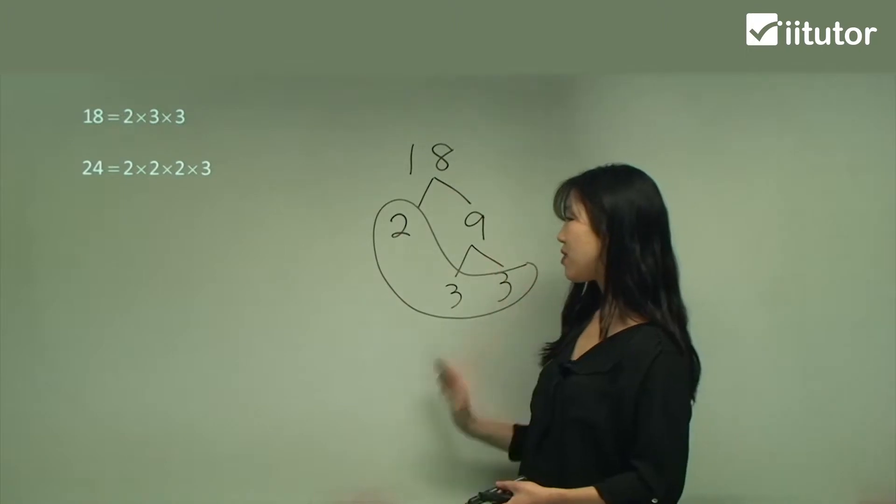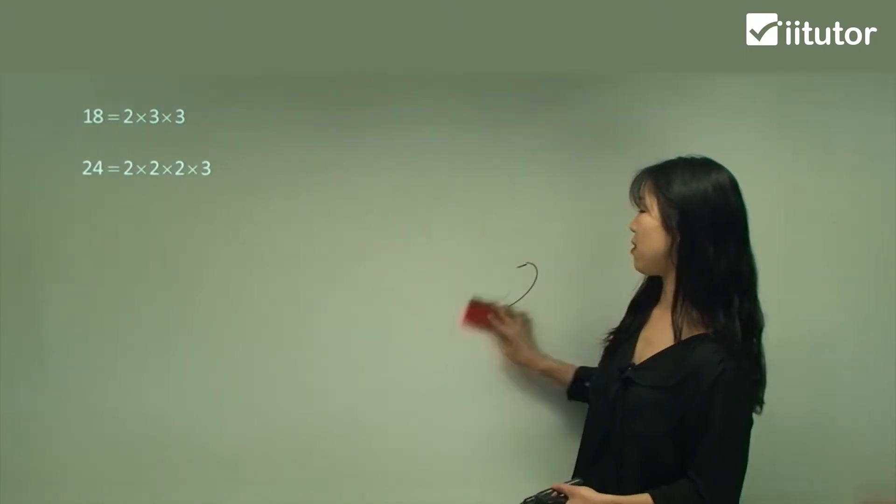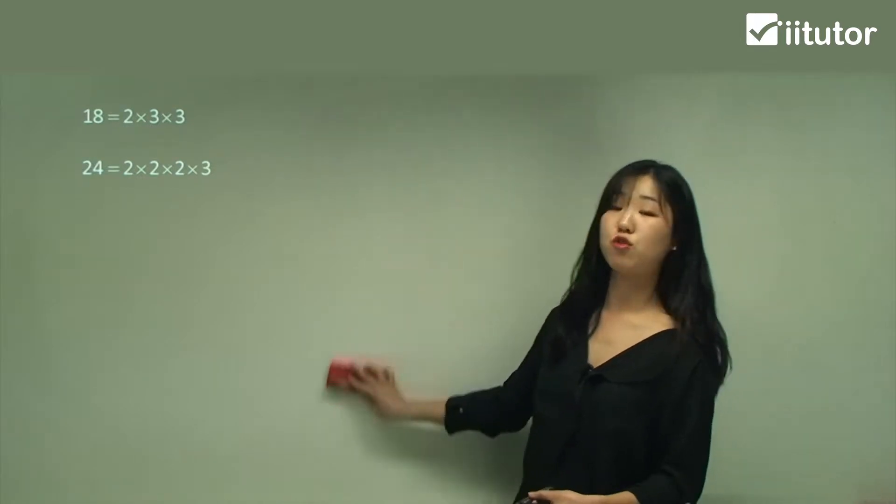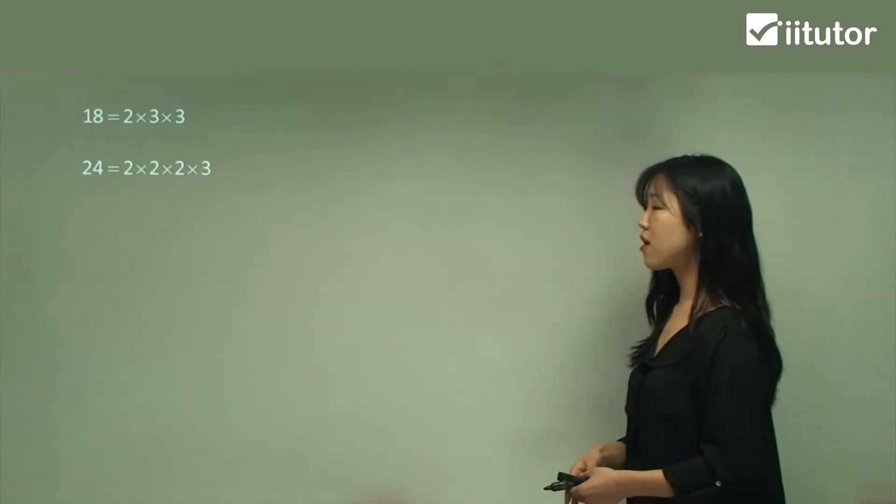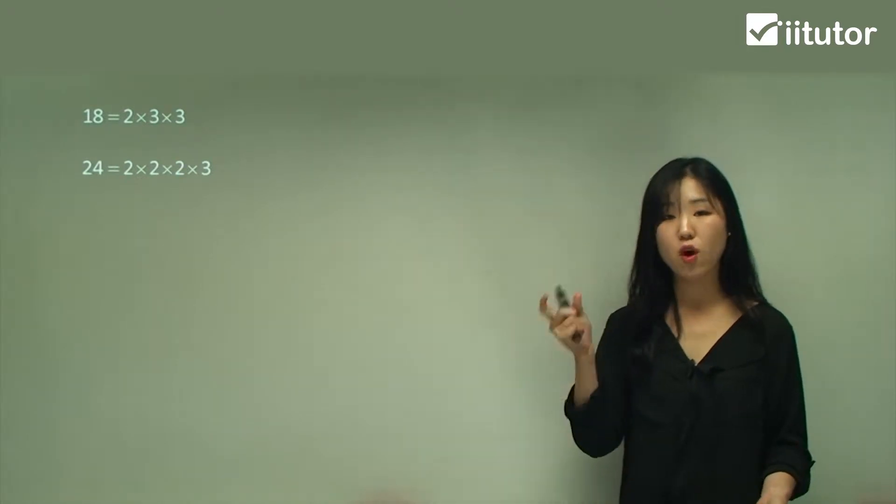Now 24 is similar method. It's 2 times 2 times 2 times 3. I did the exact same thing. You might want to try that with the tree if you're not sure.